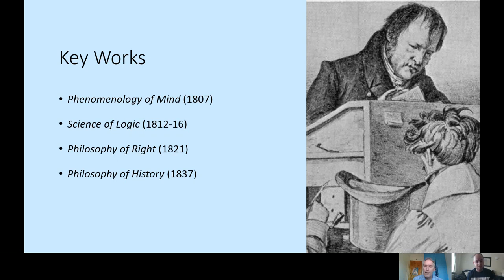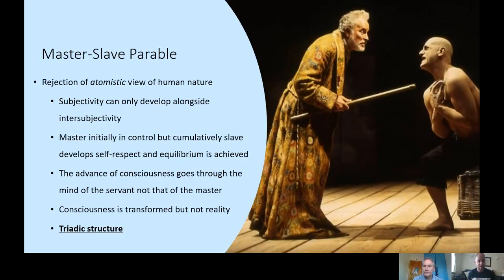The way we've done this presentation is that we're going to start with relatively straightforward ideas, and then build up to the real brain-twisting ideas towards the end. That in some ways reflects Hegel's own philosophical development. The early text, the Phenomenology of Mind, entails the Master-Slave Parable, which we'll look at next. That is relatively straightforward and a good place to start for people who are totally new to Hegel.